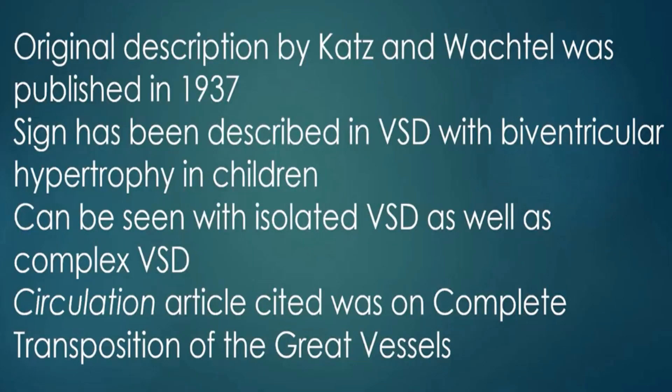The original description by Katz and Wachtel was published in 1937. The sign has been described in VSD with biventricular hypertrophy in children, and it can be seen with isolated VSD as well as complex VSD. In fact, the article cited from Circulation was on complete transposition of the great vessels.